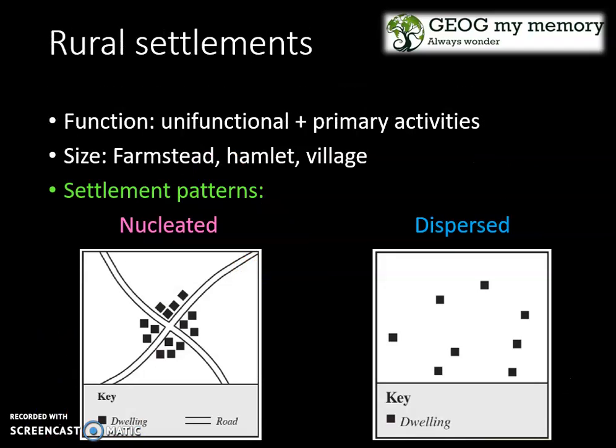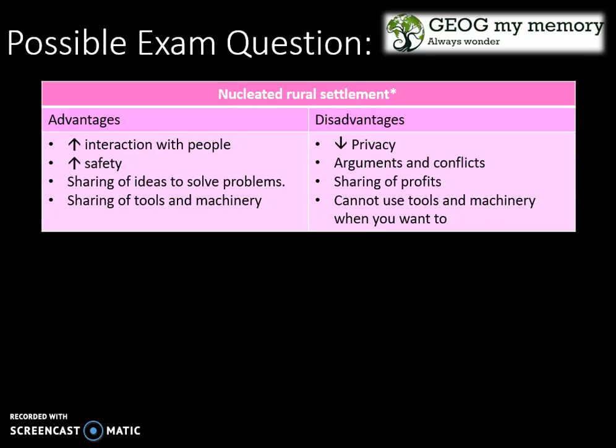Now that we understand the function and size of rural settlements, what settlement patterns do we have? We have nucleated and dispersed. Let's look at the advantages and disadvantages — this is a common exam question.